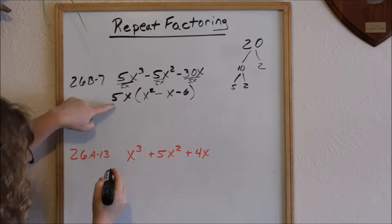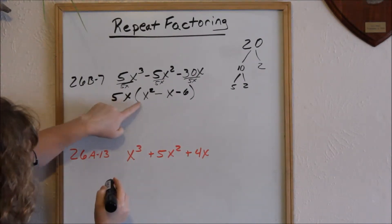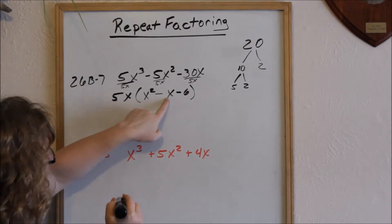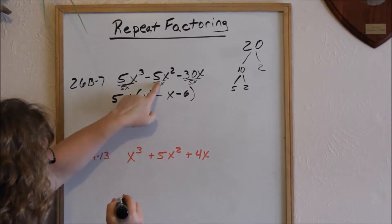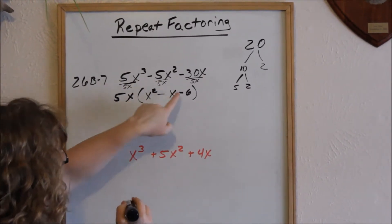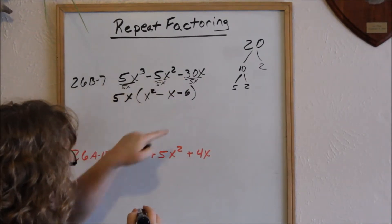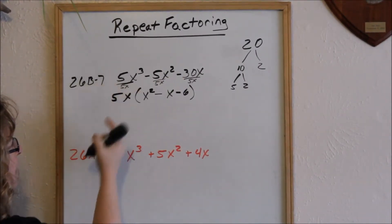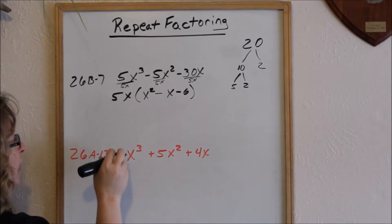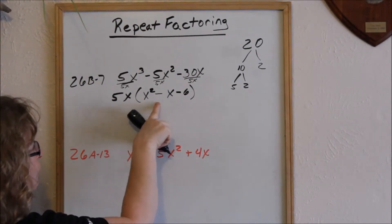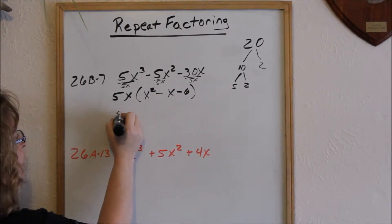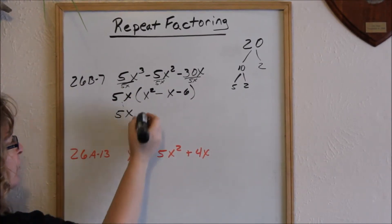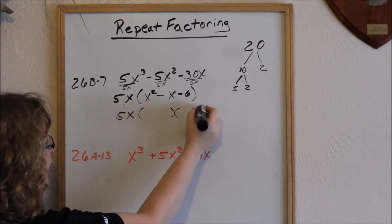Going back and distributing: 5x times x squared gives 5x cubed, 5x times negative x gives negative 5x squared, and 5x times negative 6 gives negative 30x. Always make sure when you go back and distribute, you're getting what you started with. We're not done — we want to continue to factor this trinomial. You are still carrying this 5x along, so don't lose that 5x.